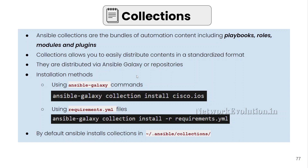Collections allow you to easily distribute content in a standardized format. We have seen Cisco IOS collections, and they are distributed via Ansible Galaxy or repositories. There are multiple installation methods — you can use the ansible-galaxy command with the namespace and collection name, or provide a requirements file that can even reference a GitHub repository.